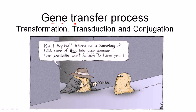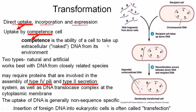In gene transfer processes, there are three different transfer processes: transformation, transduction, and conjugation. Let's see what happens in these three different processes.